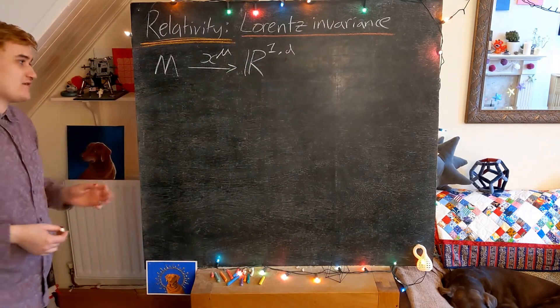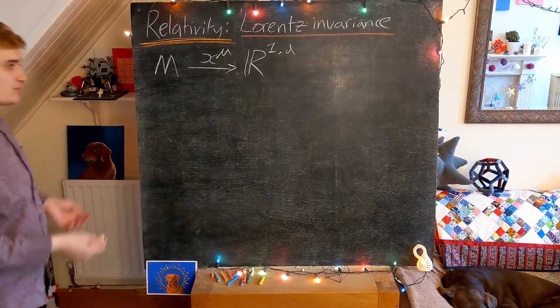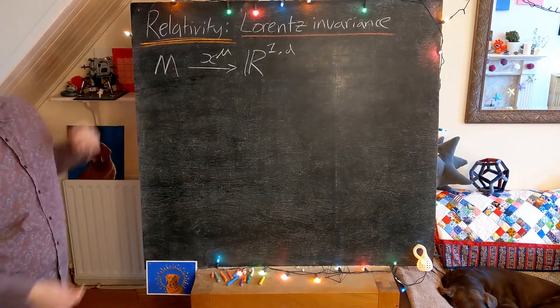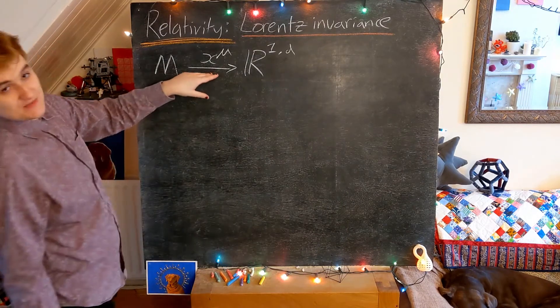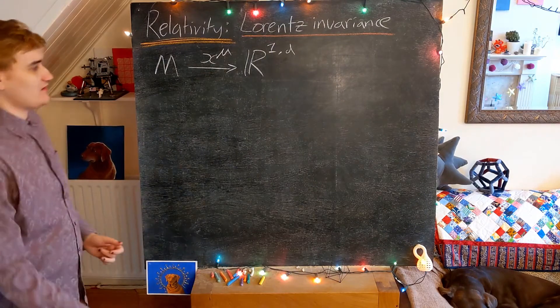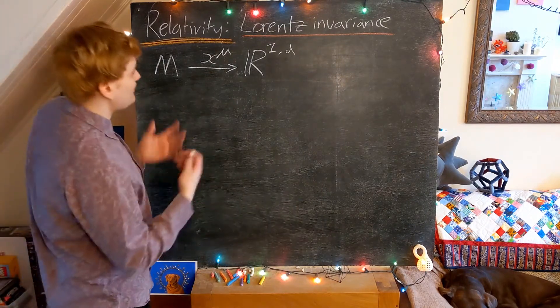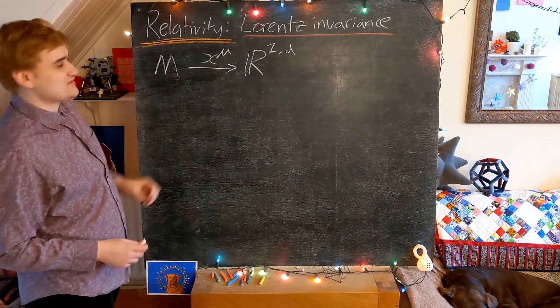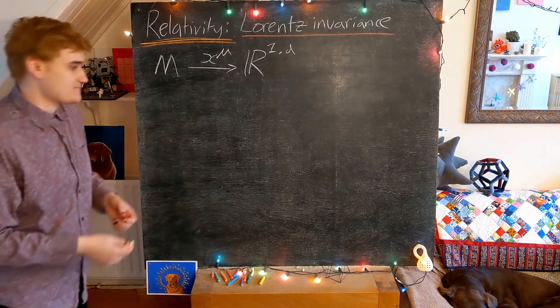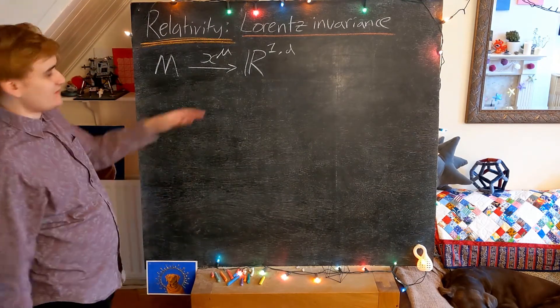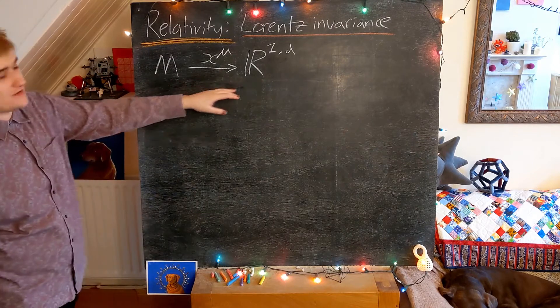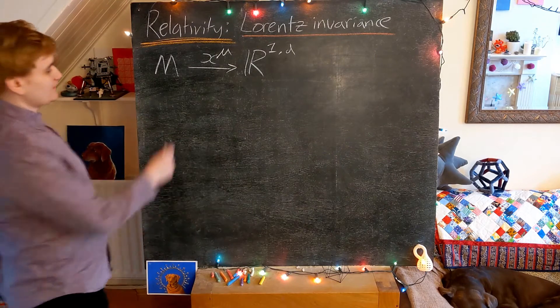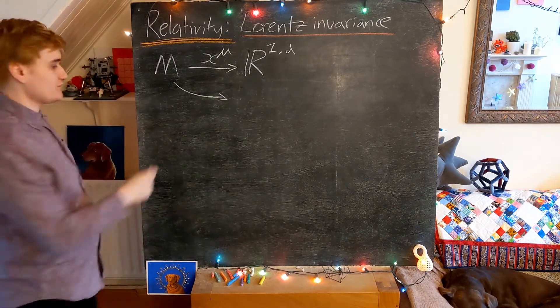But now what we need to realize is that this x mu that we've written down, this coordinate function, is just completely arbitrary. I haven't told you what the explicit form of this function is. The key thing we need to realize when we talk about manifolds is that any x mu that I could potentially write down, so long as it satisfies the correct set of axioms to be a coordinate function, there are going to be many functions that are going to satisfy those axioms.